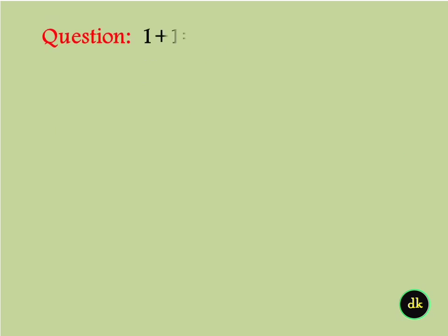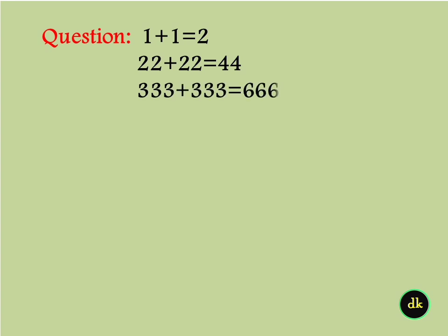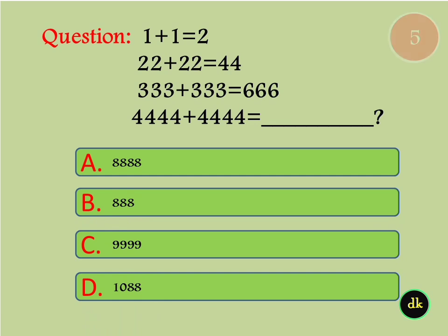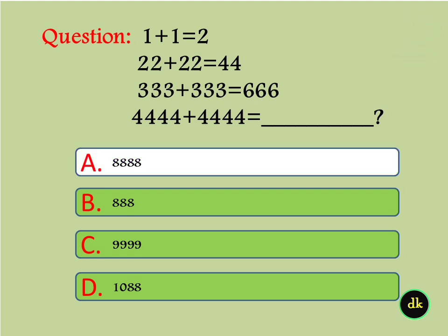1 plus 1 is equal to 2. 22 plus 22 is equal to 44. 333 plus 333 is equal to 666. What is 4,444 plus 4,444? Answer is 8,888.